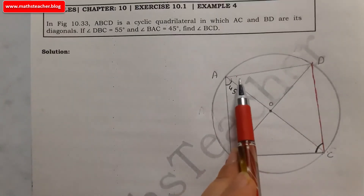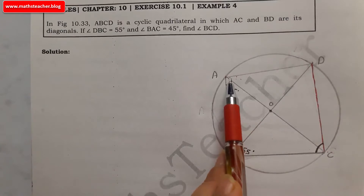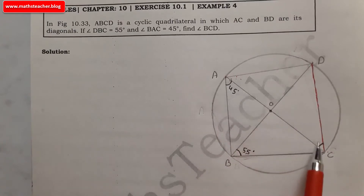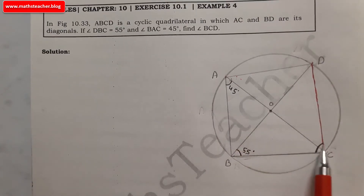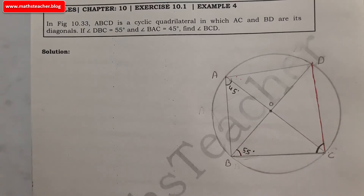So if angle DBC is 55 degrees, then angle DAC will also be 55 degrees. It will simply be 55 plus 45, which gives 100 degrees. This is our logic, and now we have solved it.